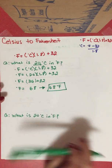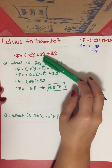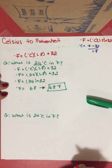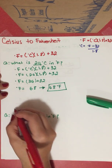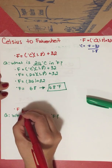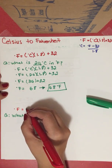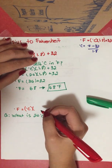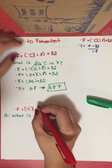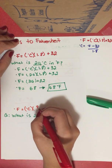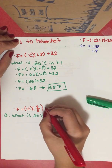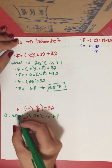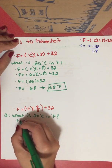I like using the decimal, but for some people using the fraction is actually easier. The fraction form is: degrees Fahrenheit equals degrees Celsius times 9 over 5 plus 32 — where 9/5 is the same as 1.8.